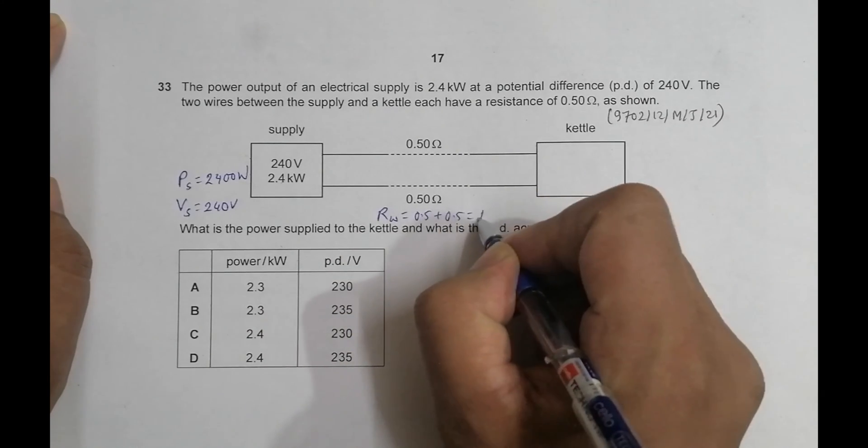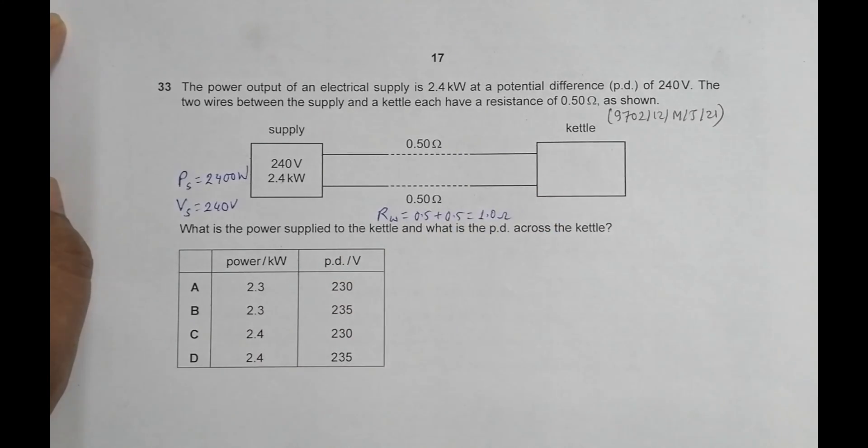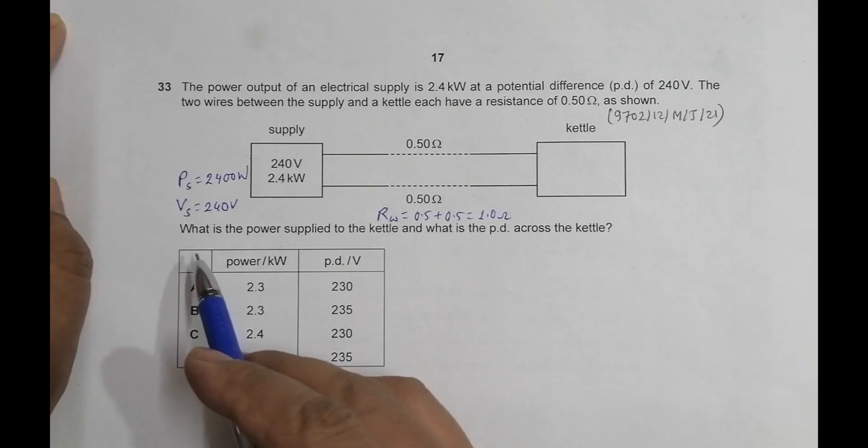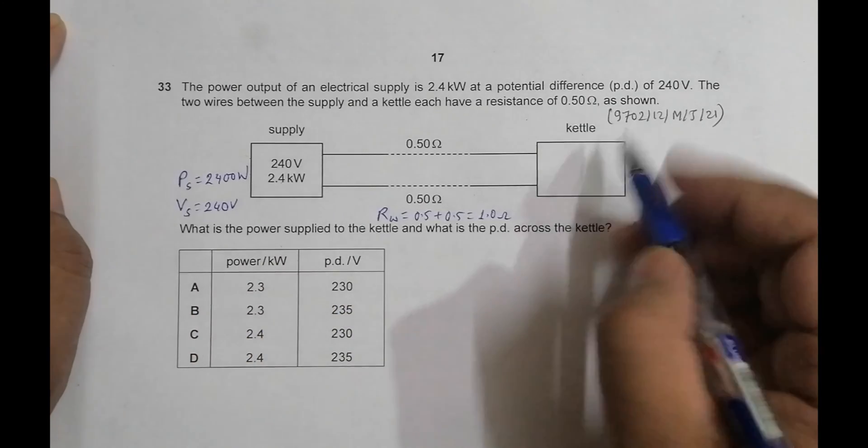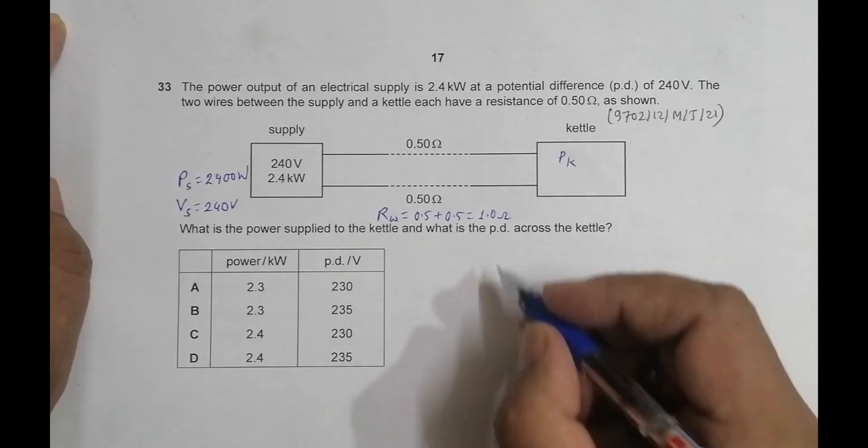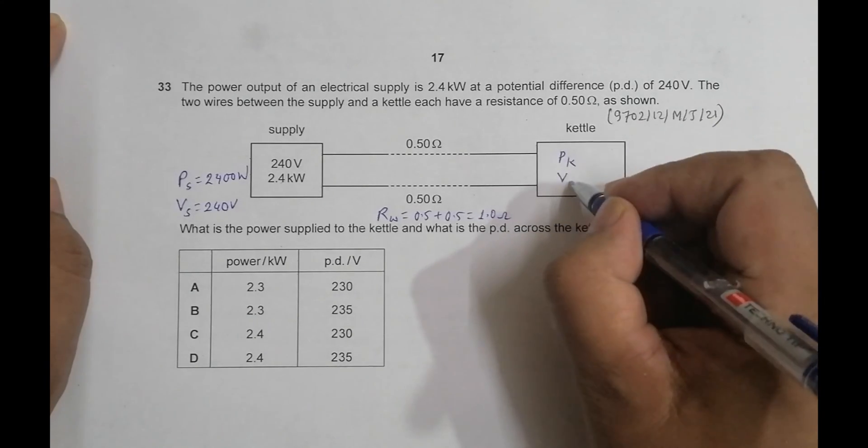So the total resistance of wires is equal to 0.5 plus 0.5, equal to 1.0 ohm. Now with this data we have to find what is the power supplied to the kettle and what is the PD across the kettle.